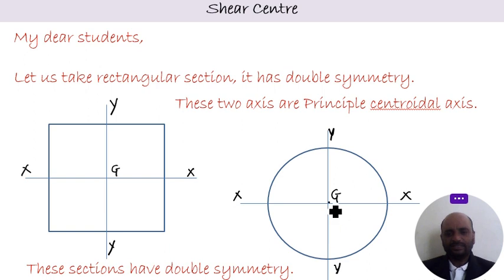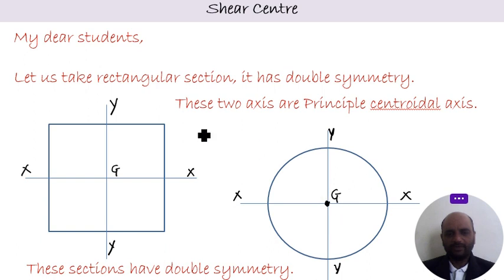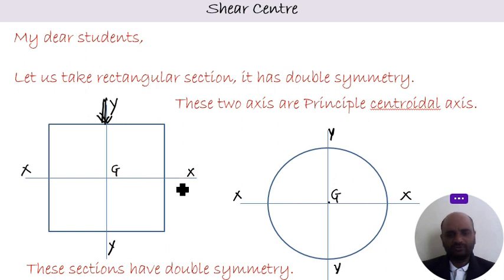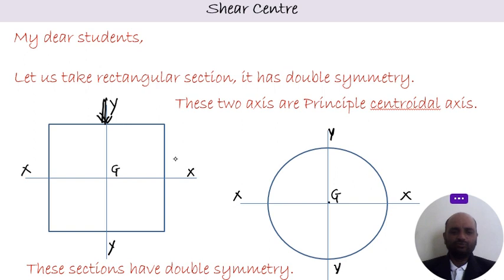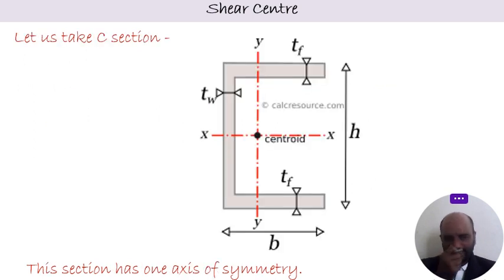Whenever you apply the load through this center of gravity G — along the y-axis — there will be only bending, no twisting. These sections have double axes of symmetry along their principal centroidal axes. Now we will consider a C-section, where the x-x axis is the axis of symmetry, but folding along the y-y axis does not give symmetry.